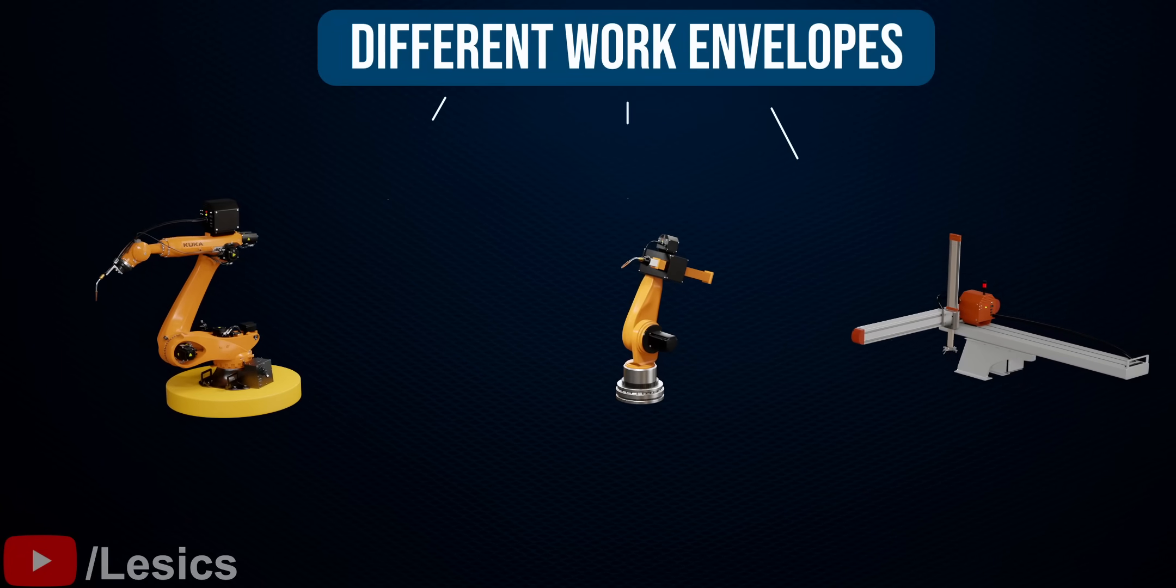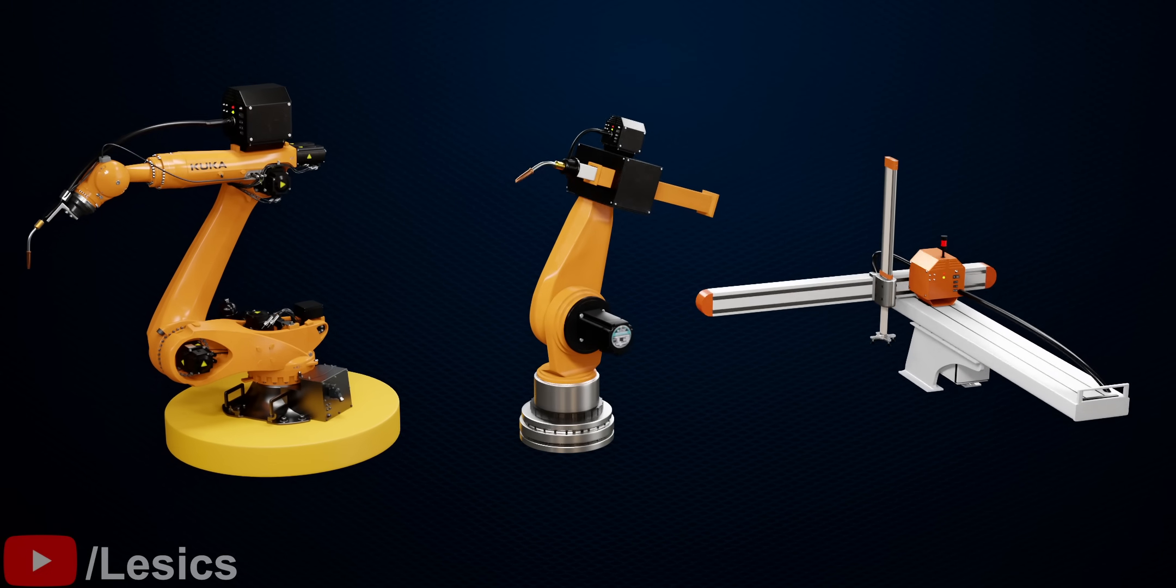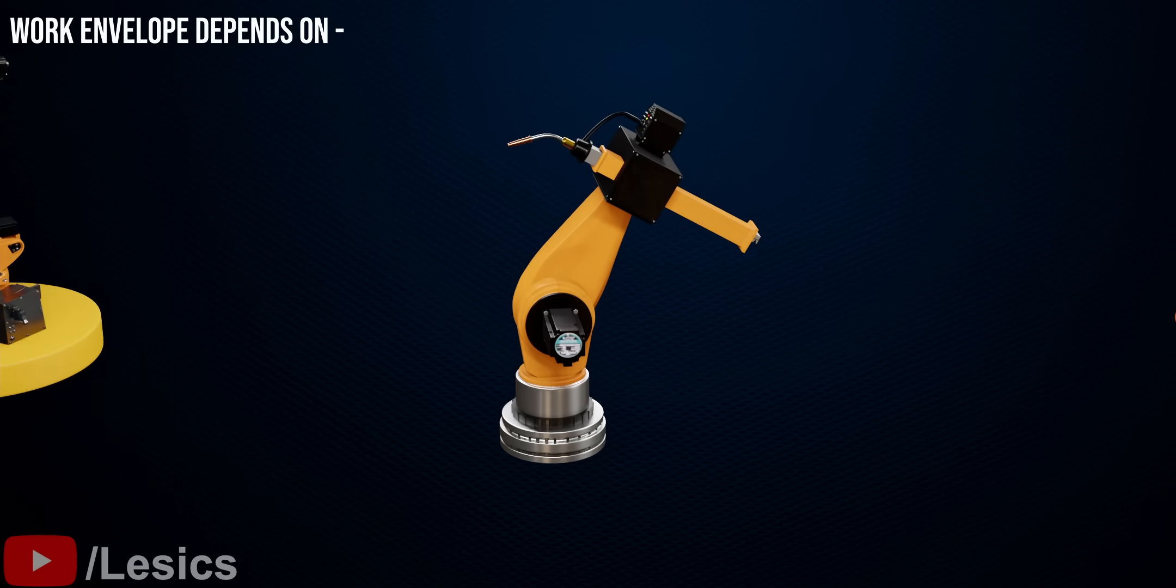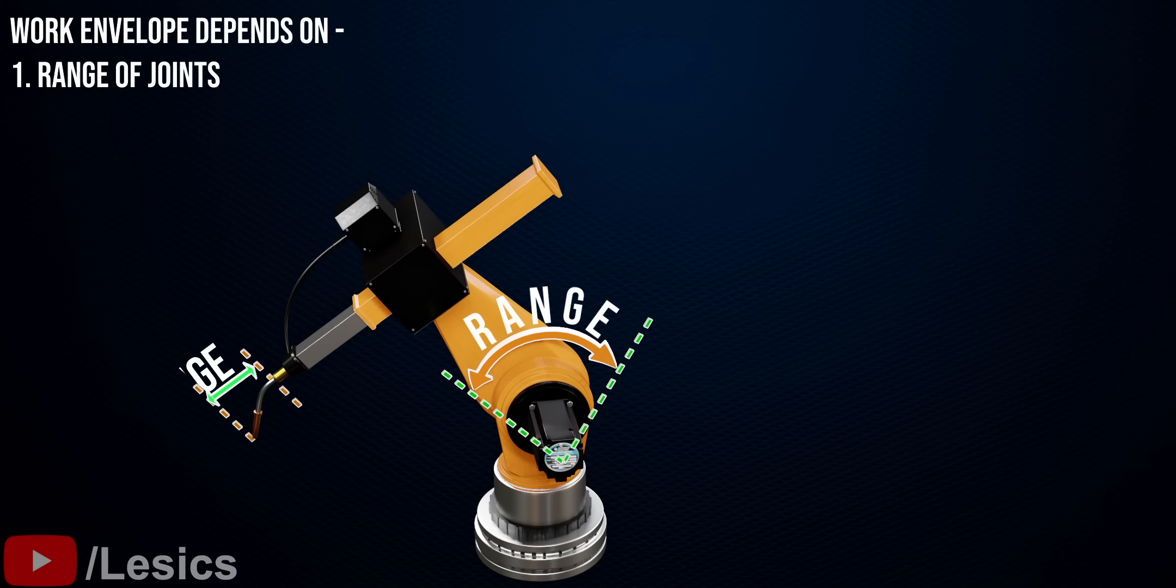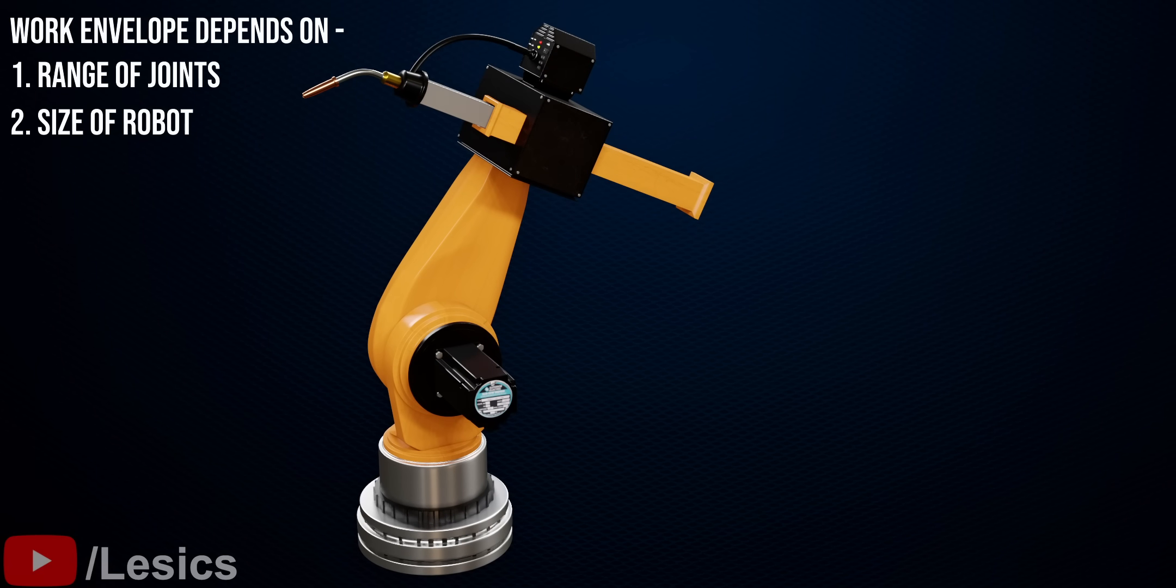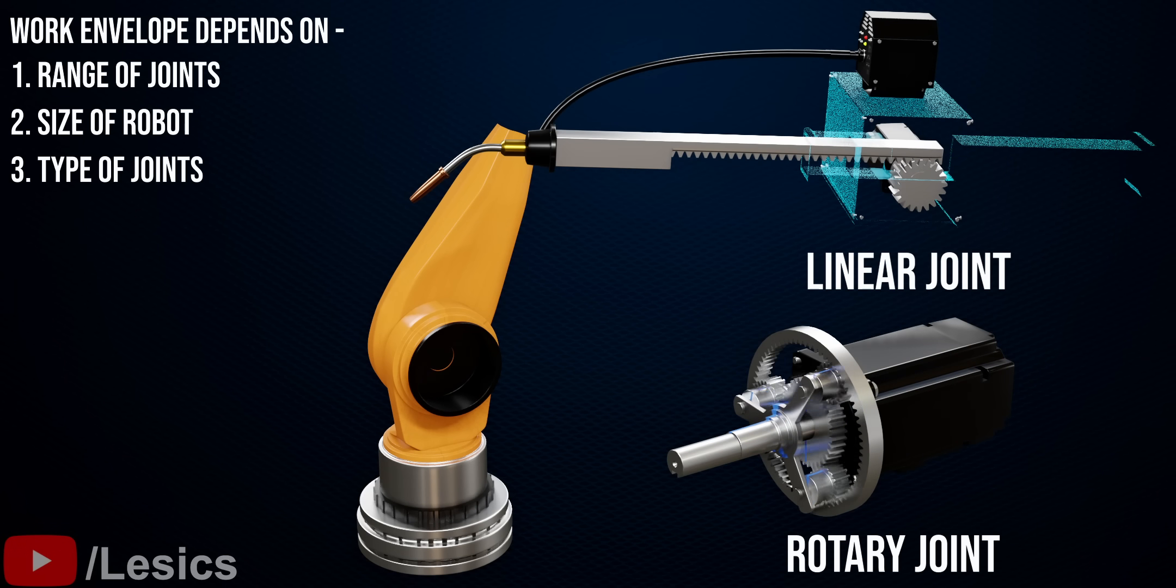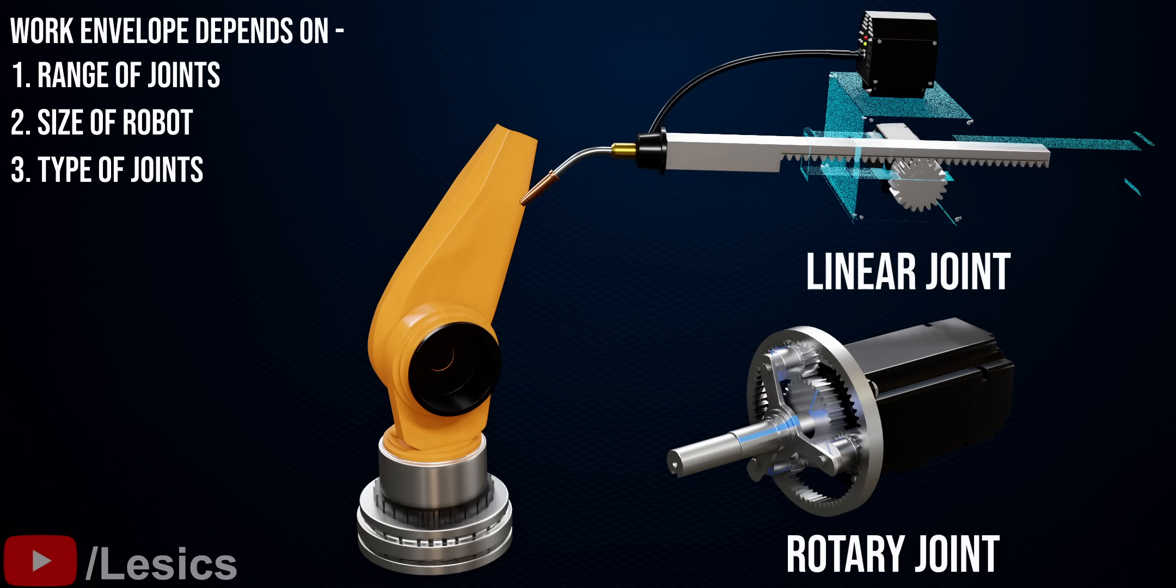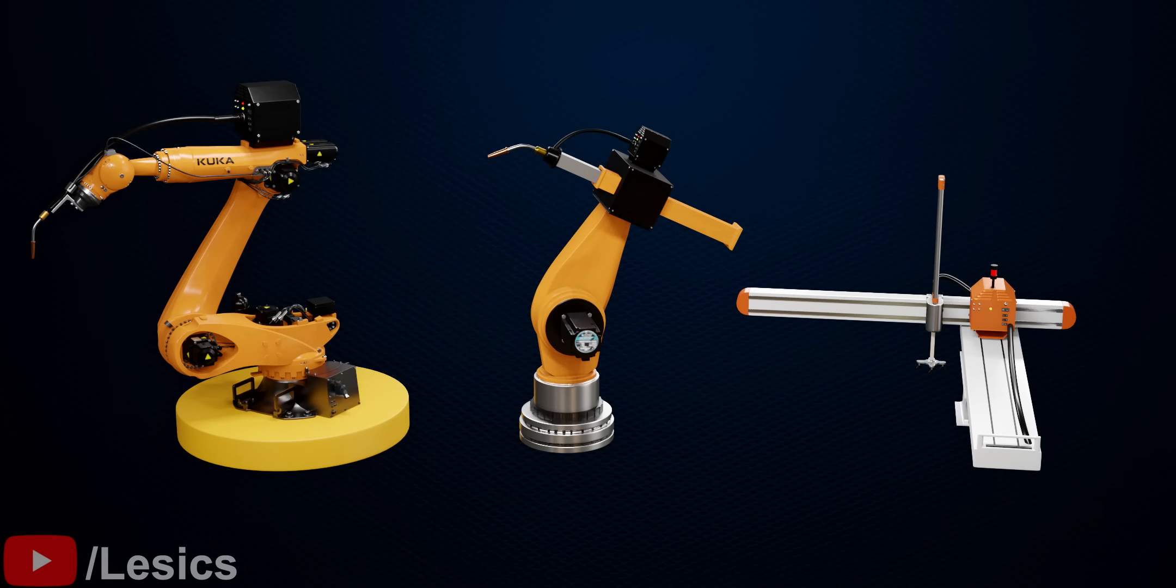The work envelope is different for different robots. A robot's work envelope depends on three physical characteristics. The first one is the range of the robot's joints. Both the linear and angular range of a robot is illustrated here. The second characteristic is the size of its body, arm and wrist. The last characteristic is the type of joints. Different work envelopes are created by modifying these three characteristics.